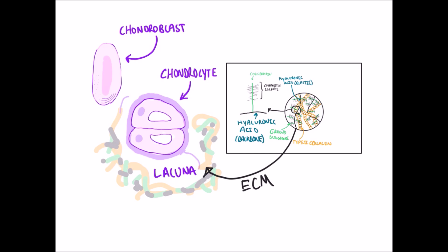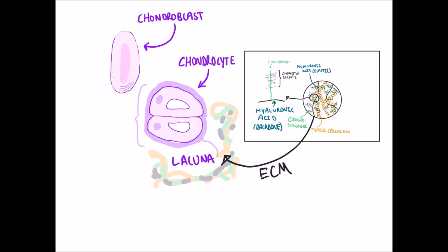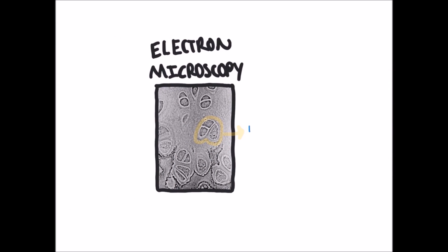Essentially, mature cartilage cells are called chondrocytes. As seen in this electron microscopy picture, they form isogenous groups. Isogenous in Latin means equal origin. In other words, these clusters of two to three cells are the antecedent of a single chondroblast.